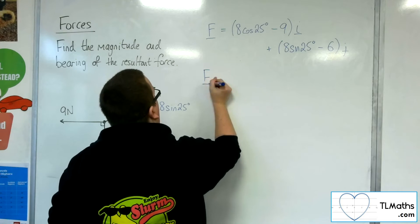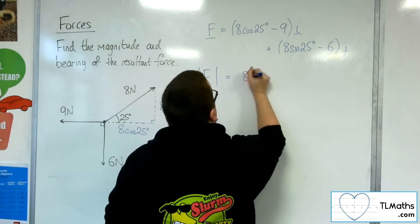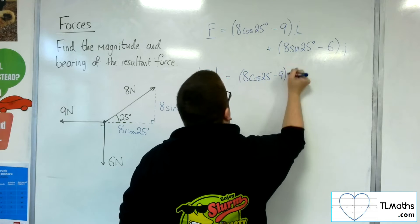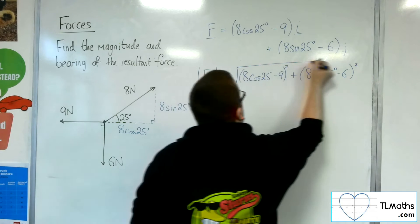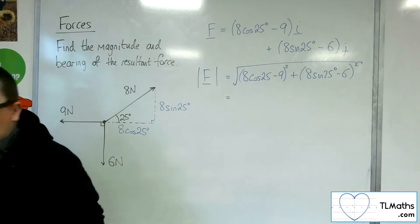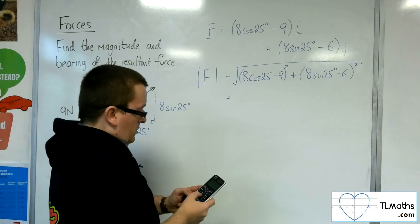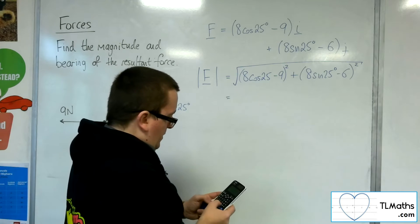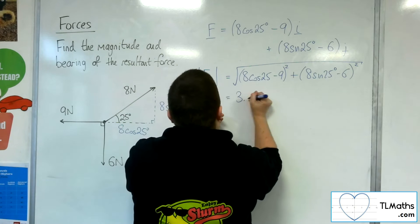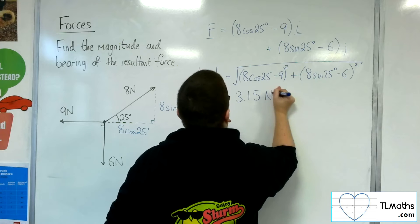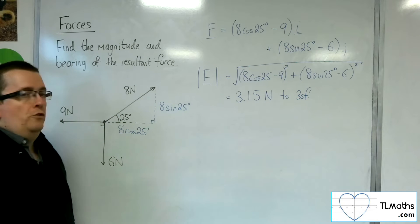So in order to find the magnitude, I'm going to have to use Pythagoras. And so the length of this force is 8 cos 25 take away 9 squared, plus 8 sin 25 take away 6 squared, square rooted. So this is a calculator job, obviously. So we have the 8 cos 25 take away 9 squared, plus the 8 sin 25 take away 6 squared, all square rooted. And we get 3.15 newtons to 3 significant figures. So that is the magnitude of the resultant force.